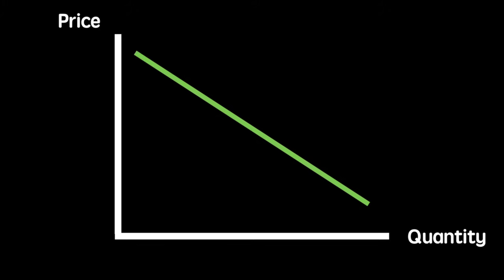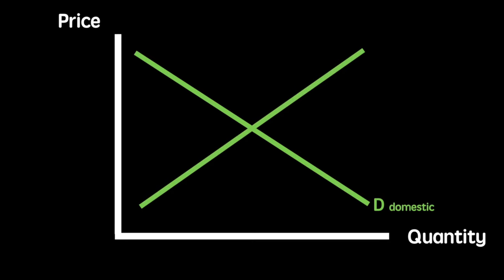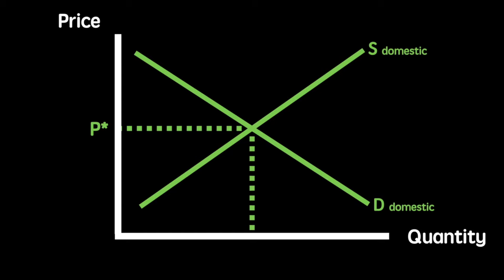Follow me through the explanation. I'll use green to represent the domestic market, orange to represent world supply before the tariff, and purple to indicate changes after the tariff. I'll plot the domestic market using a diagram you should already be familiar with, including domestic supply and demand with equilibrium price P star and equilibrium quantity Q star.